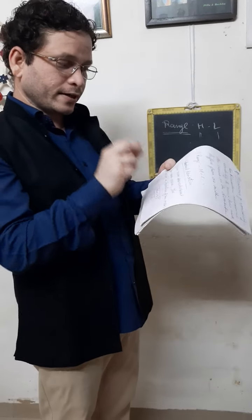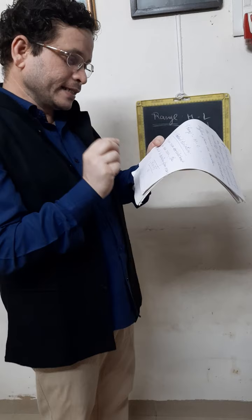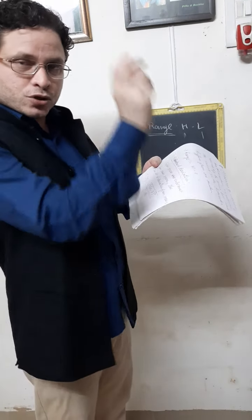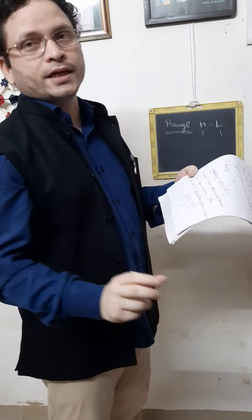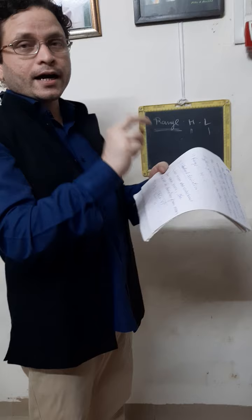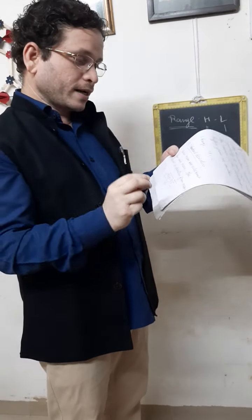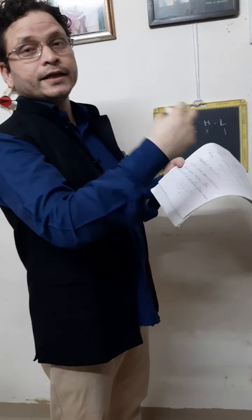When mean is subtracted from each score, the result is deviation from mean. It means we can understand how much a score is deviated from the mean. SD means we consider the mean score and when we subtract it from each score, we see how much each score is deviated from the mean. That is standard deviation.